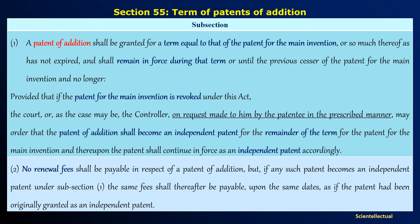Section 55, Term of Patents of Addition. Subsection 1: a patent of addition shall be granted for a term equal to that of the main invention patent, or so much thereof as has not expired, and shall remain in force during that term or until the previous cessation of the patent for the main invention and no longer. That is, the term of a patent of addition is the same as the term of the patent of the main invention.